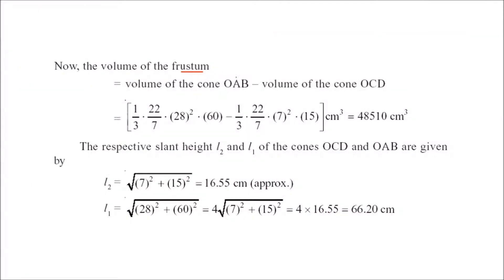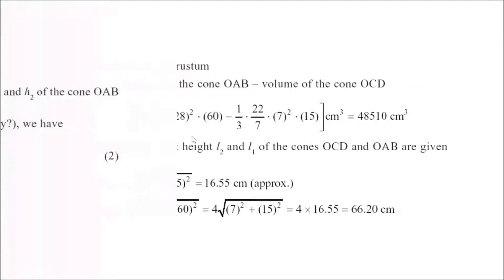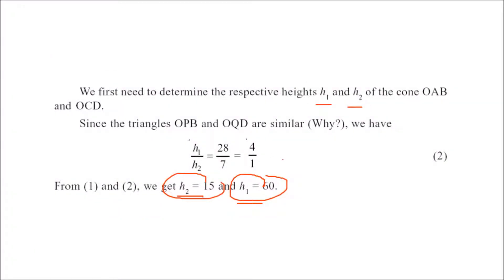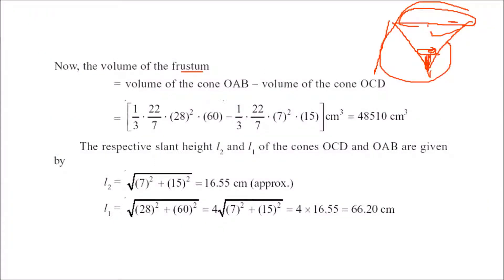The volume of the frustum is the volume of the bigger cone minus the volume of the smaller one. If you subtract the smaller volume from the whole volume, you get the volume of the frustum. Now all radii and heights are known: h2 is 15, h1 is 60, r1 is 28, r2 is 7. So take the volume of the bigger cone: (1/3)π r² × h = (1/3)π × 28² × 60, minus (1/3)π × 7² × 15. The difference gives the volume of the frustum.